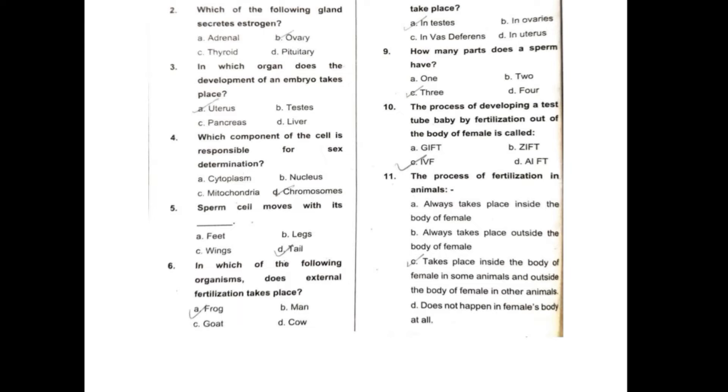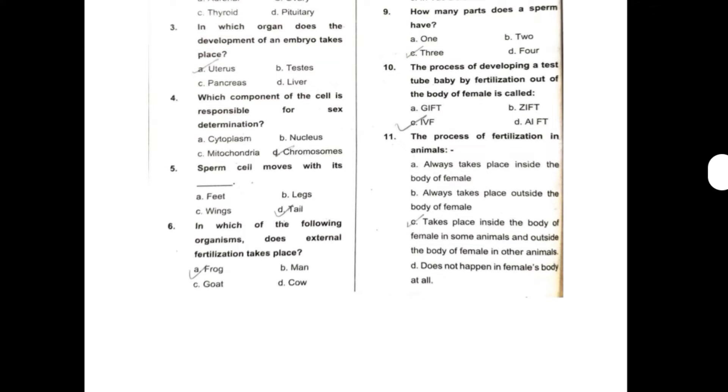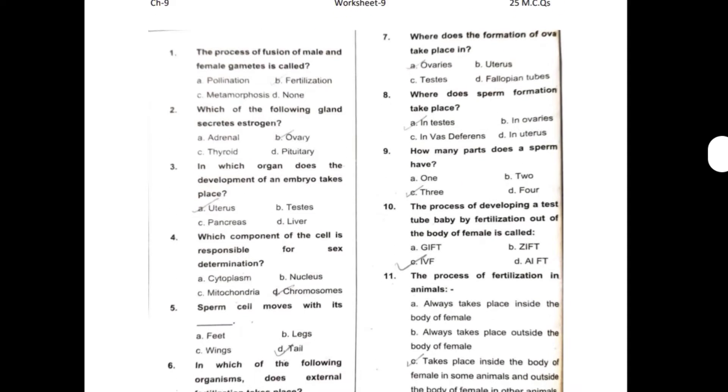Fourth, which component of the cell is responsible for sex determination? So this can be chromosomes. Fifth, sperm cell moves with its... So this can be tail. Sixth, in which of the following organisms does external fertilization take place? So this can be frog.